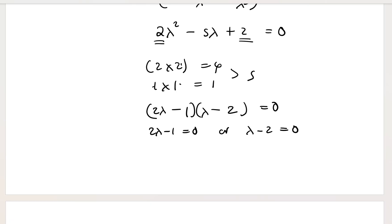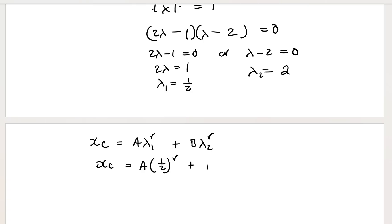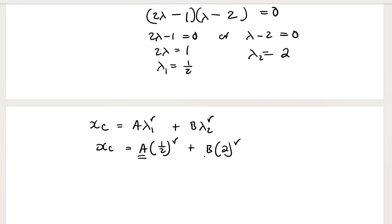From 2λ − 1 = 0, we get λ₁ = 1/2. From λ − 2 = 0, we get λ₂ = 2. The complementary function or general solution is x sub c equals A·(1/2)^r plus B·2^r. This demonstrates how to use the method of undetermined coefficients to solve a system of linear ordinary difference equations.